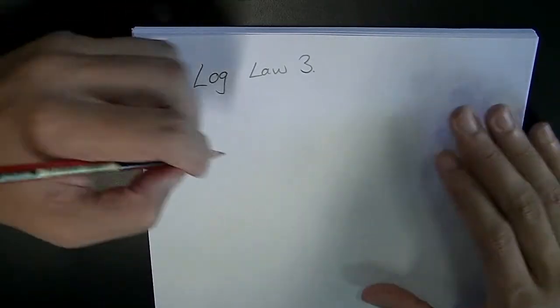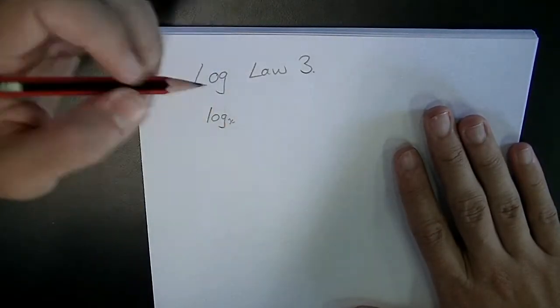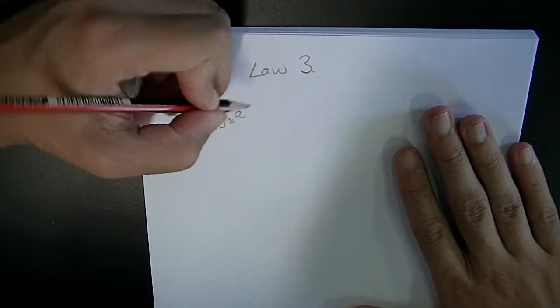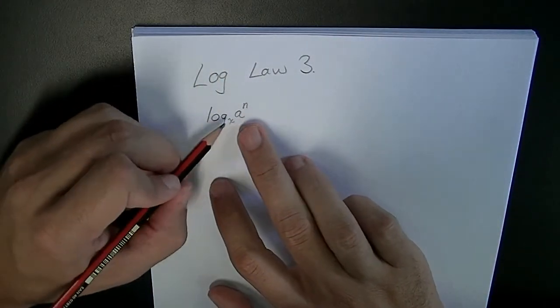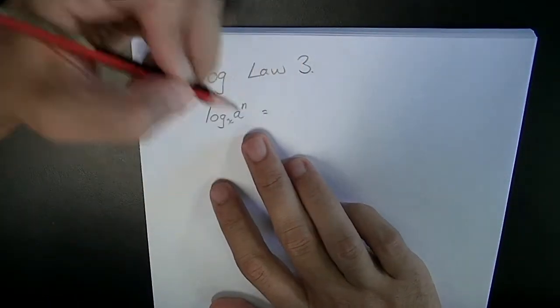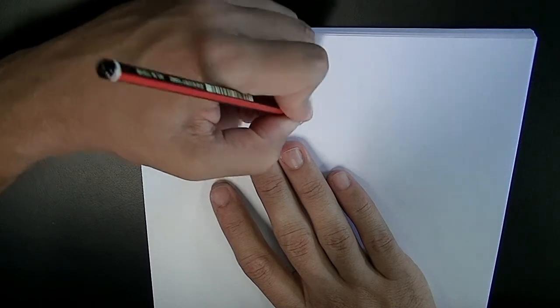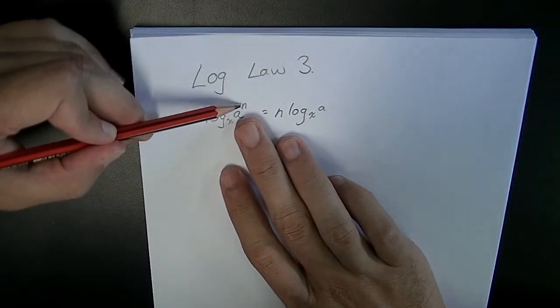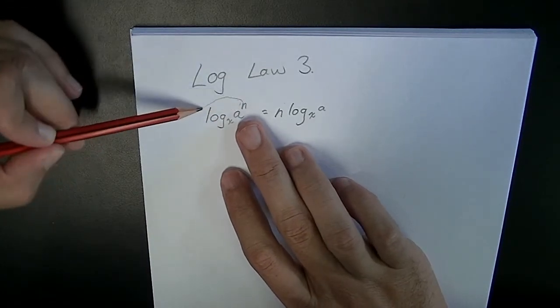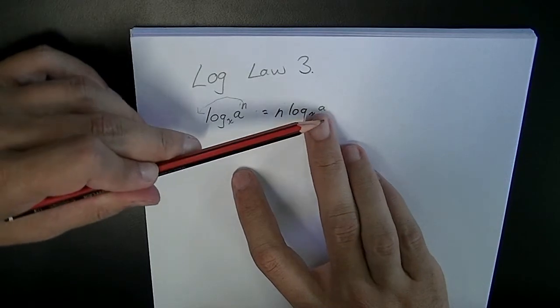Let's look at what it first looks like. Log some base, I don't care what the base is, a to the power of n. So log base x, a to the power of n, can be rewritten as n log base x to the a. So that power, that index, can move from there out to the front, n log base x, a.